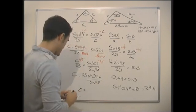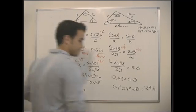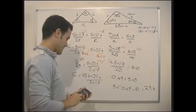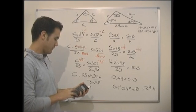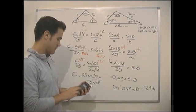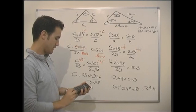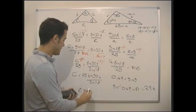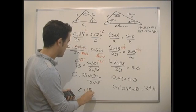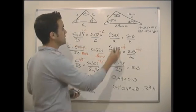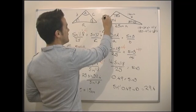And we can pop that on our calculators and we find that 25 sine 32.4 divided by sine 118 gives us 15 centimeters. So it tells us that this side is 15.